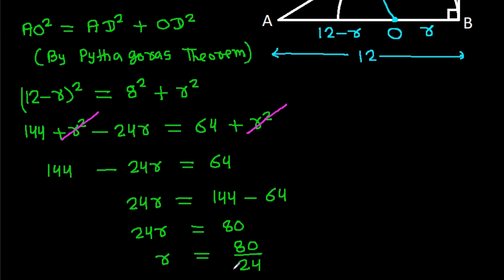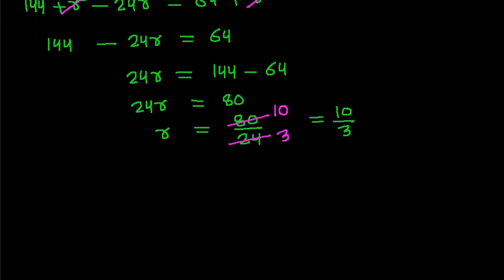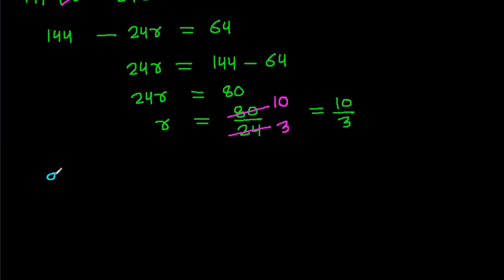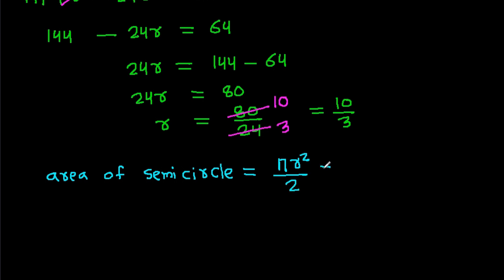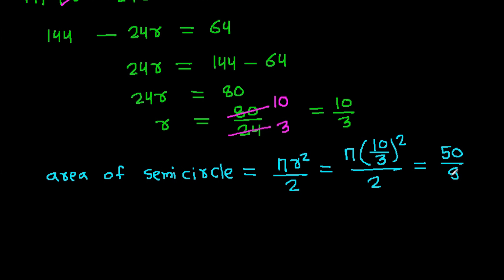Since 8 times 3 is 24 and 8 times 10 is 80, R simplifies to 10 over 3. And again, the area of the semicircle is pi R squared over 2, which is pi times (10/3) squared over 2, giving 50 over 9 pi.